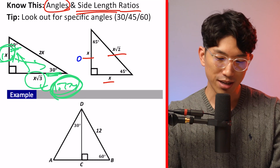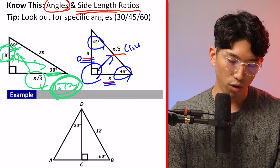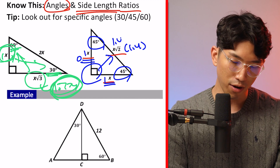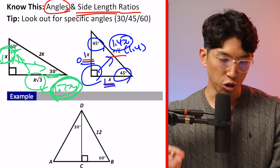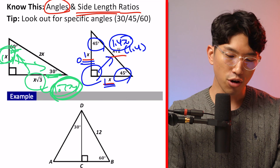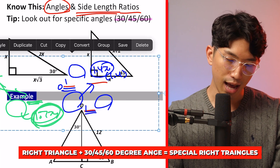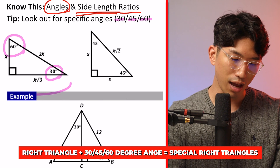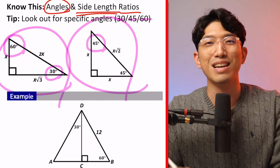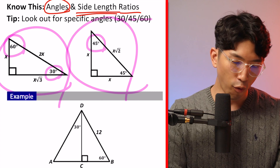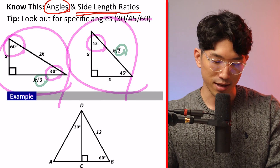Knowing the side length ratios is the bare minimum. One important thing to start doing: whenever you're working with right triangles and you see 30°, 45°, or 60°, chances are the question is testing you on special right triangles. It is not a coincidence — there's about a 98% chance it's testing you on special right triangles, and you want to start with that assumption. It's like a hint that College Board is giving you. On top of the angles, also look out for √3 or √2 in a geometry question — again, a sign it's testing you on special right triangles 98% of the time.